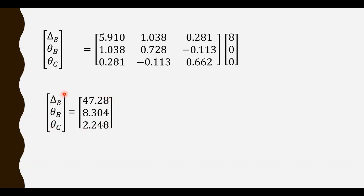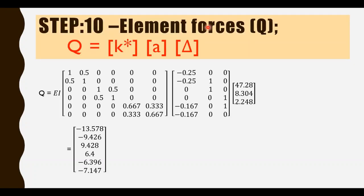At the last step we calculate element forces. The element force can be calculated using the equation Q equals element stiffness matrix into displacement transformation matrix into displacement matrix. We have all the matrices, so we just multiply them to get the member force or element force Q. This is the final answer of this question. I hope you understand this method. Thank you.